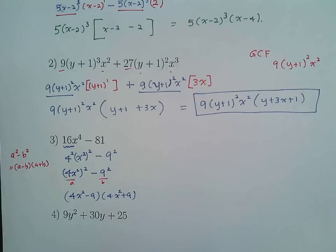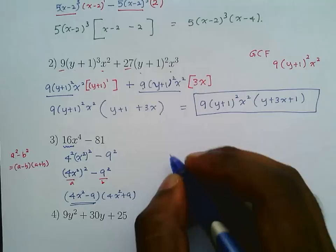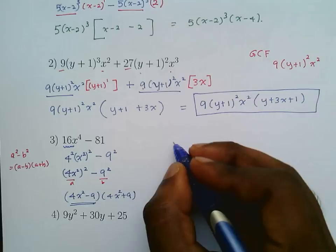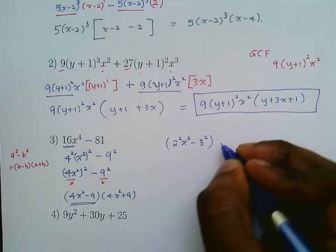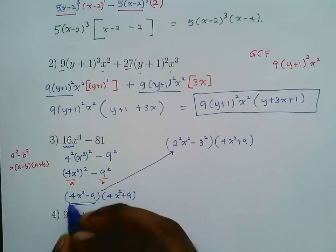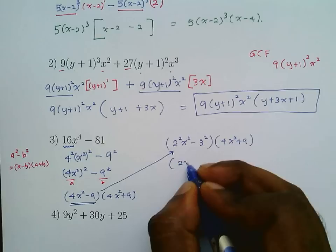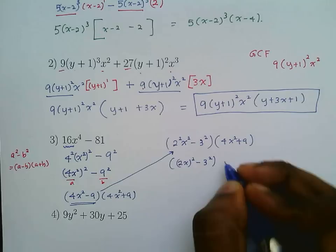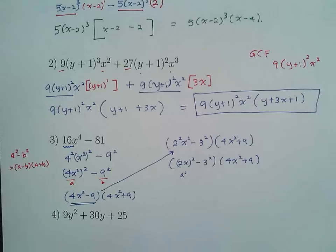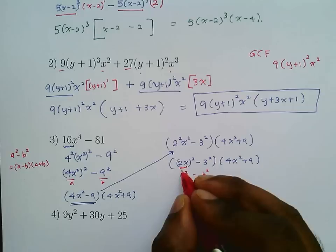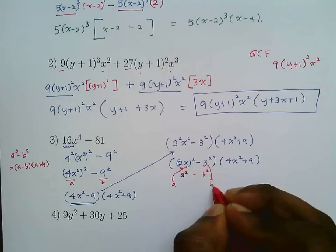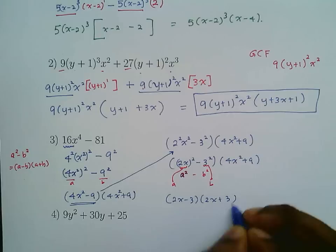But we're not done — (4x² - 9) can be factored further. Rewrite it as (2x)² - 3², which is again a difference of two squares. This gives (2x - 3)(2x + 3). The factor (4x² + 9) cannot be factored further since it's a sum, not a difference. So the full factorization is (2x - 3)(2x + 3)(4x² + 9).